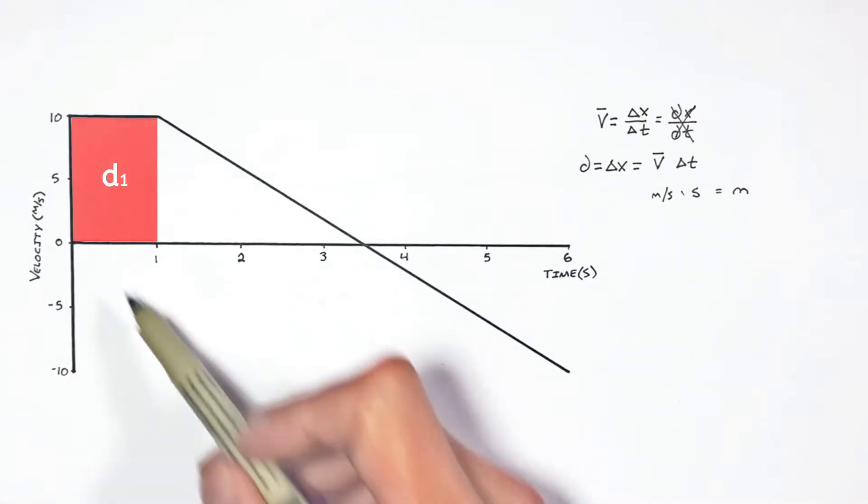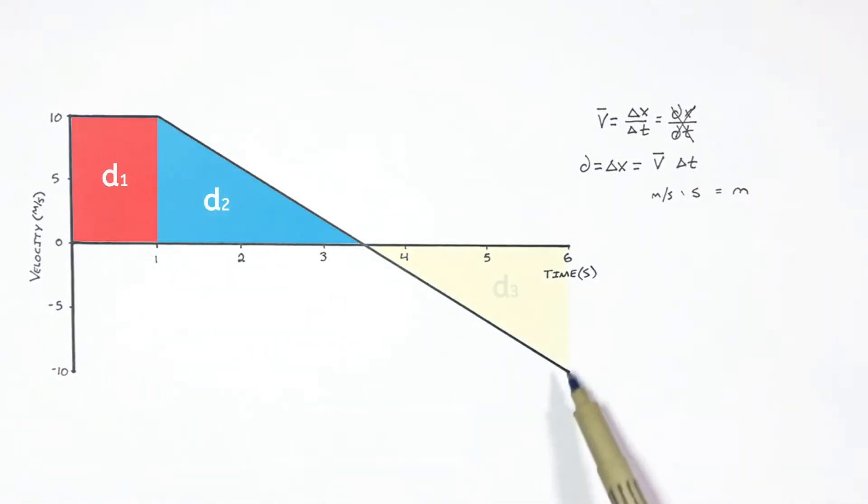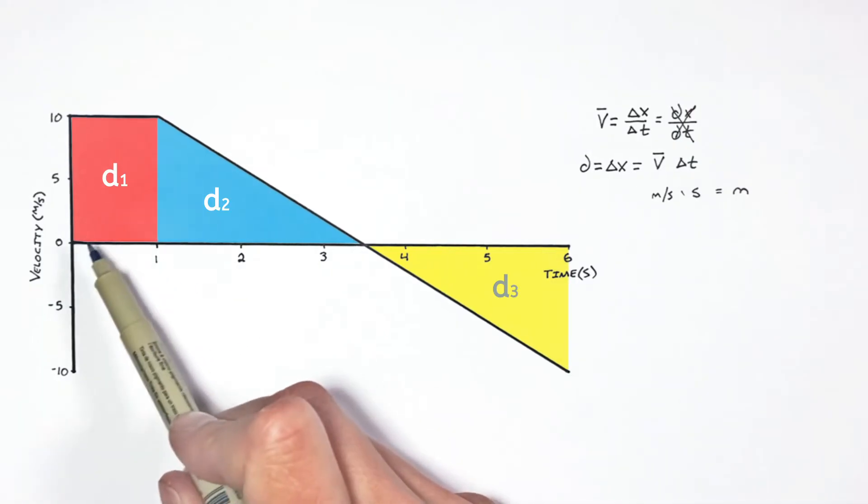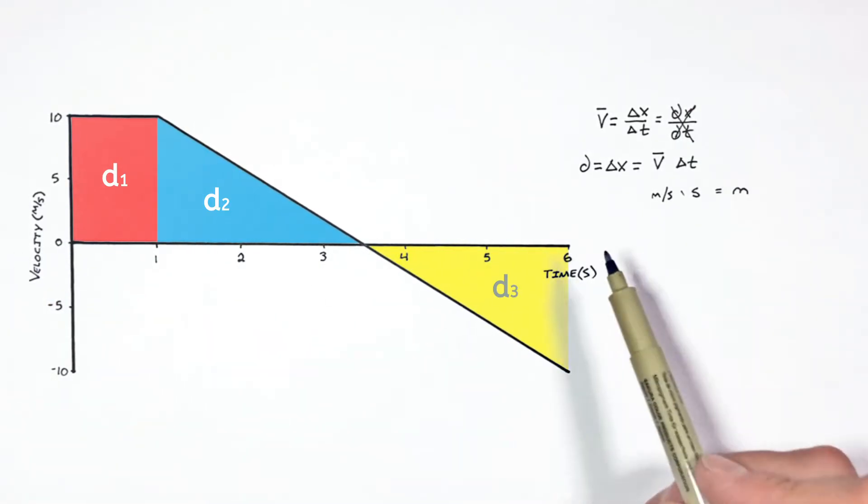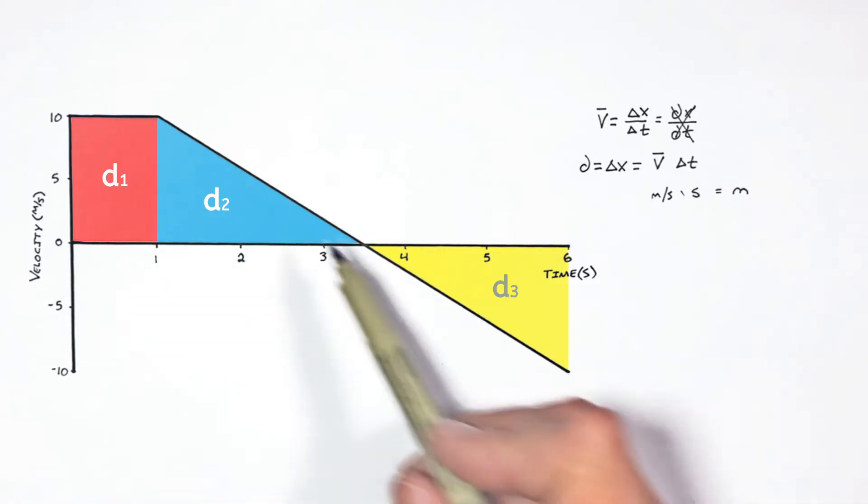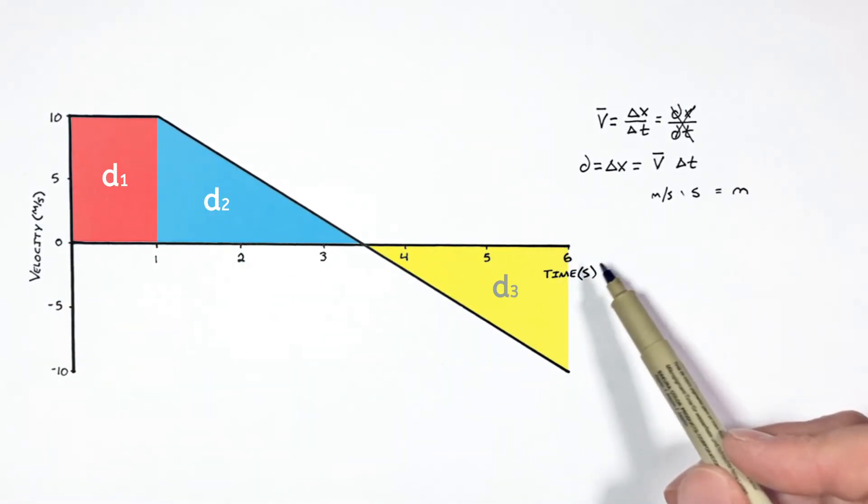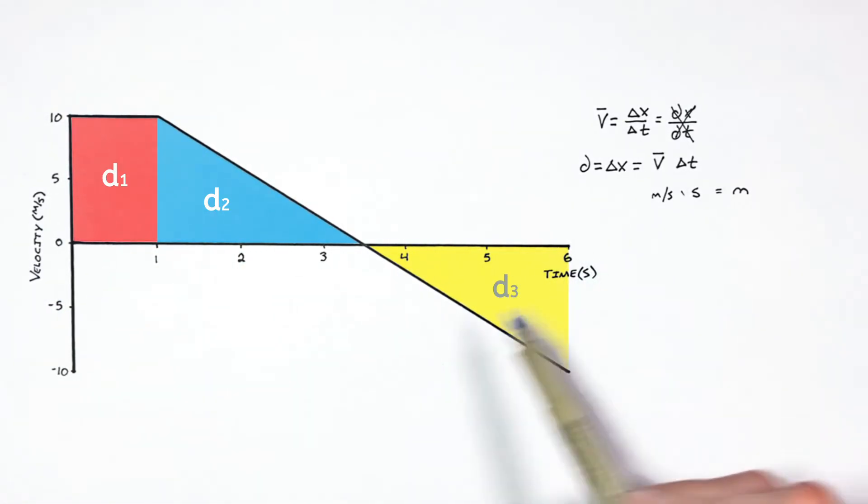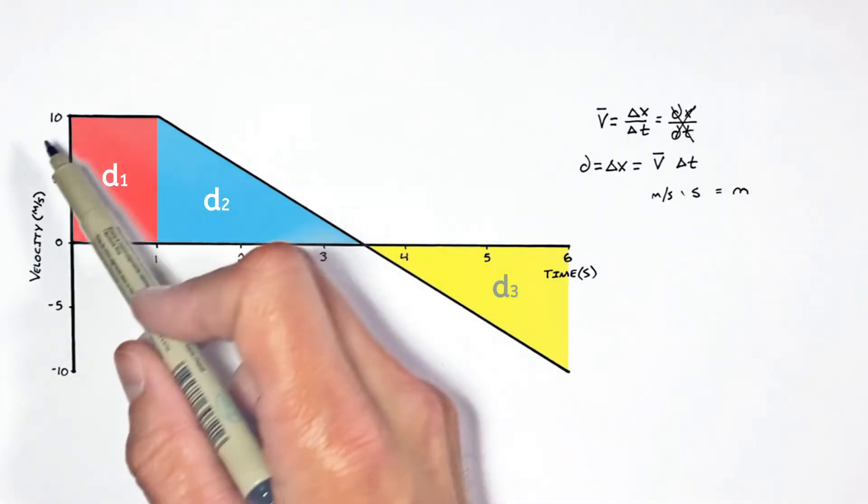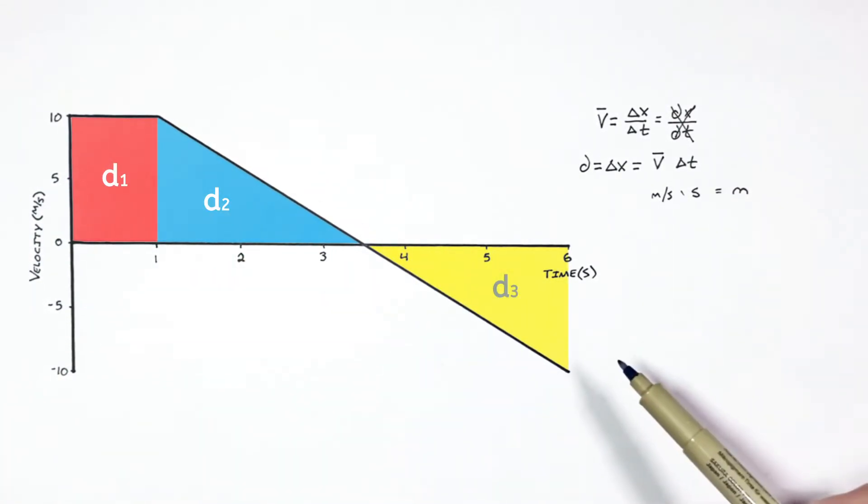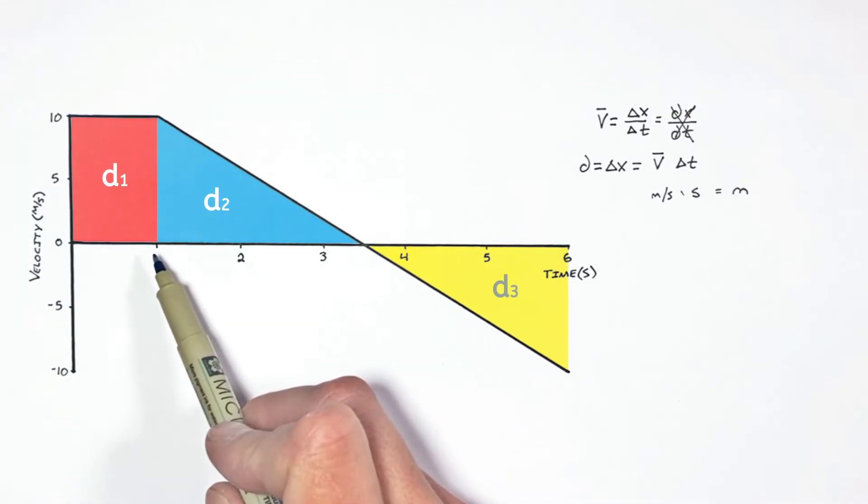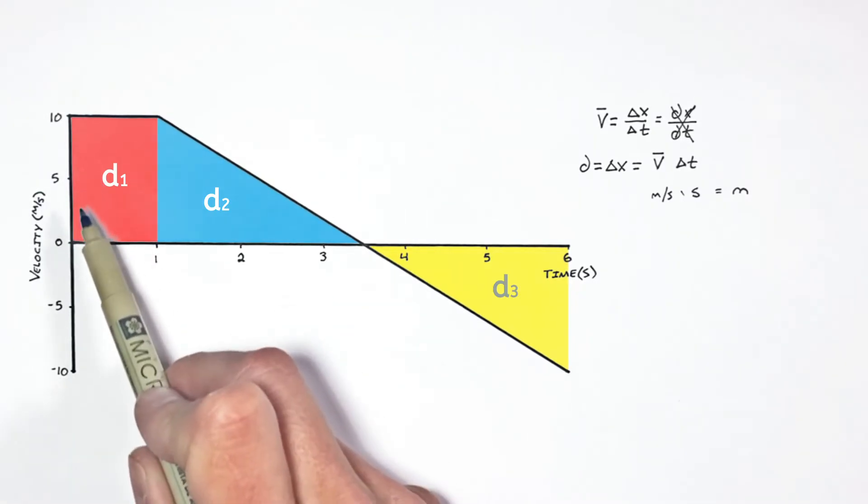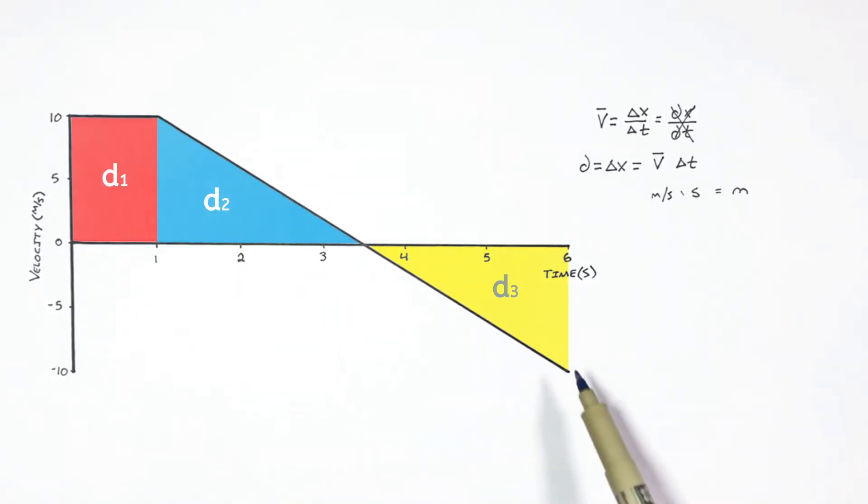And so armed with the idea that the area underneath this entire curve is the total displacement of the object over these six seconds, we're going to solve for the total displacement of the object from start to finish in this problem. Now to do that, we're not going to come up with some functions for these lines like somebody might do in a calculus class. Instead, what we're going to do is just break this curve up into three separate areas or phases of motion.